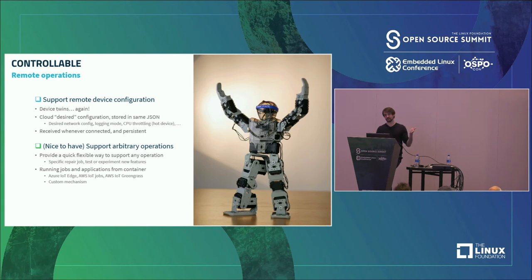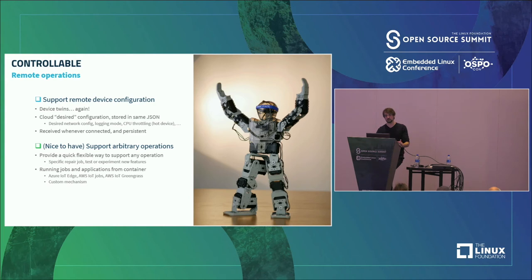A nice thing to have is supporting arbitrary operations. Let's say you have 100 devices with a specific issue — you don't want to manually go to each one to fix it. If you have a way to run arbitrary functions on the device — using AWS IoT Jobs, a container with IoT Edge, or any way to automate a script — that will save you time when you need to run something on multiple devices.